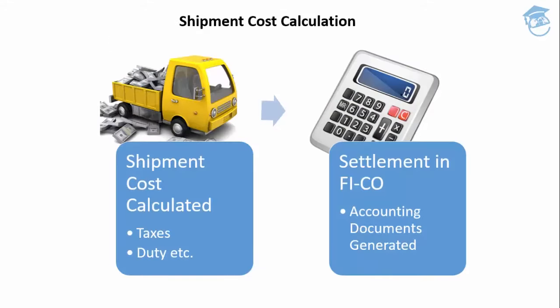A big part of transportation planning is what we call shipment cost calculation and settlement. It allows costs to be calculated and facilitates their settlement in accounting. A number of costs can arise as an organization deals with transportation logistics — allowances, levies, and border fees — and these costs can be projected and forecasted. The system allows these to be passed on to accounting for settlement, and shipment cost documents will then arise.